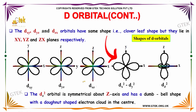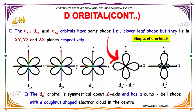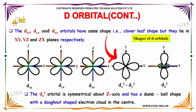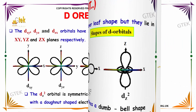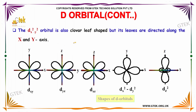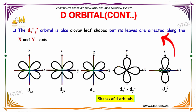The dz² orbital is symmetrical about the z-axis and has a dumbbell shape with a donut-shaped electron cloud in the center. The dx²-y² orbital is also clover-leaf shaped, but its leaves are directed along the x- and y-axes.